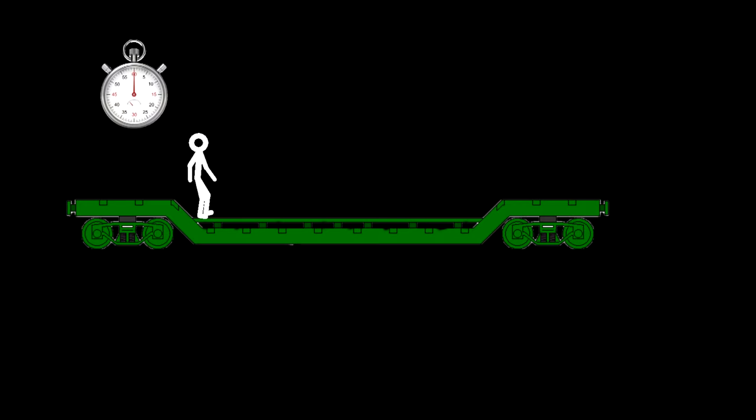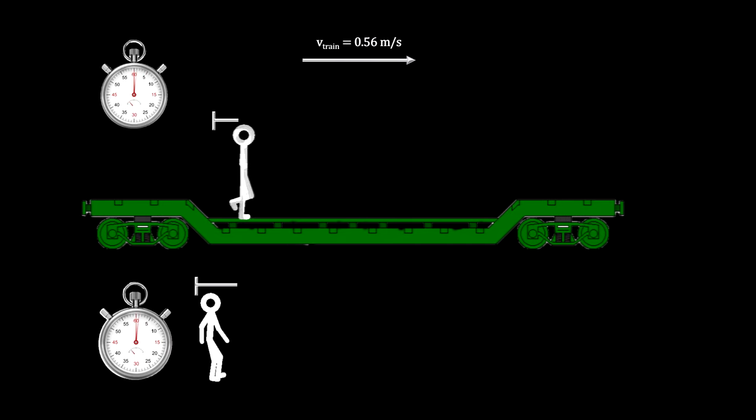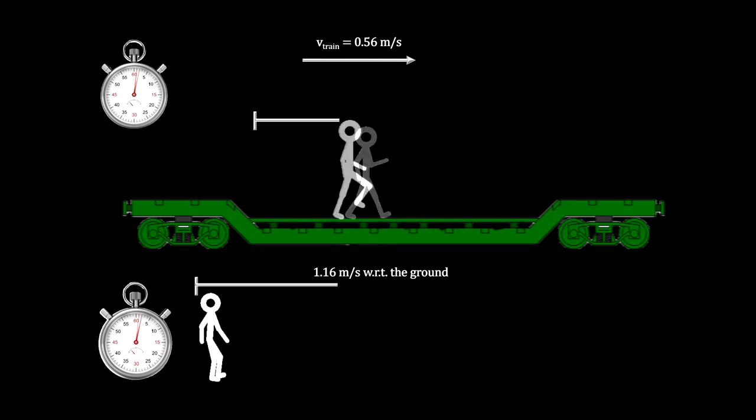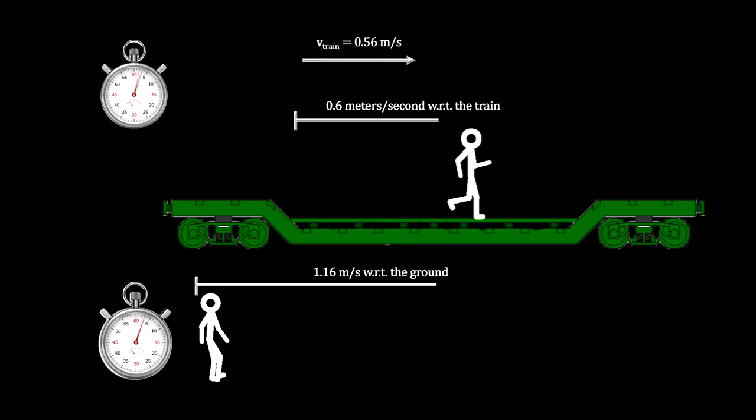With this in mind, to be completely accurate, the statement needs to be worded as: the person on the train is moving at 0.6 meters per second with respect to the train, and the person on the train is moving at 1.16 meters per second with respect to the ground.